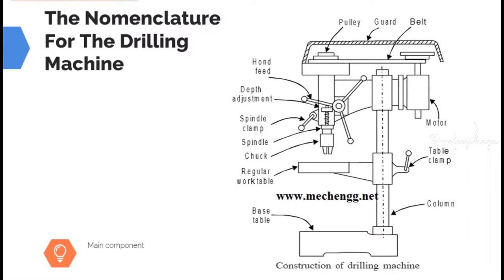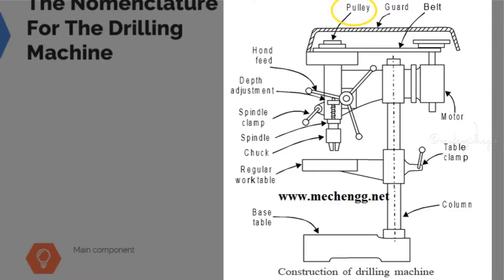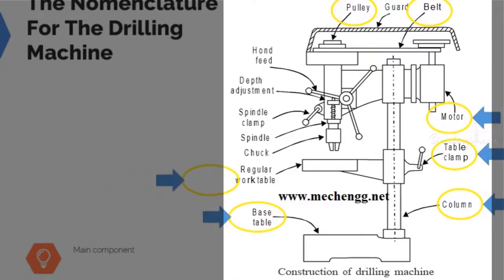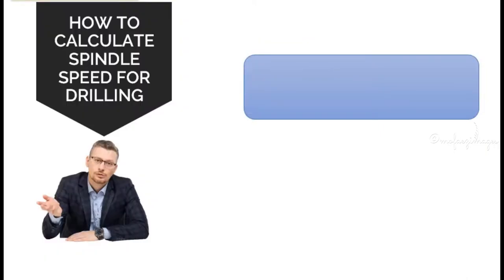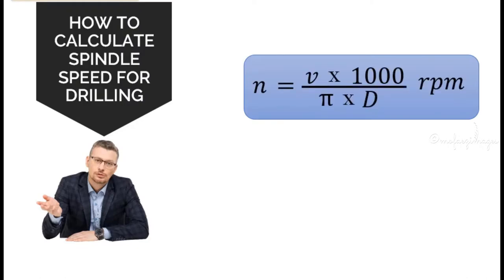The nomenclature for the drilling machine is as follows: the pulley belt, motor, table clamp, column, base, table regulator, work table, chart, spindle, spindle clamp, and depth adjustment. Now we come to how to calculate the spindle speed for drilling.